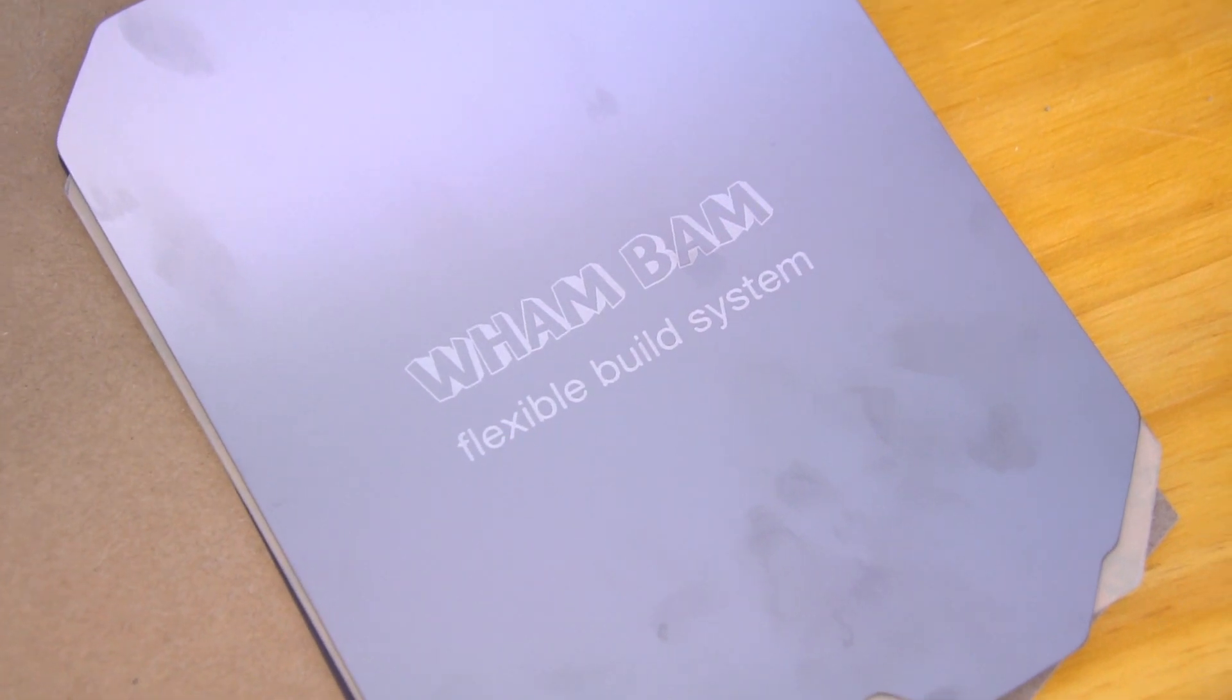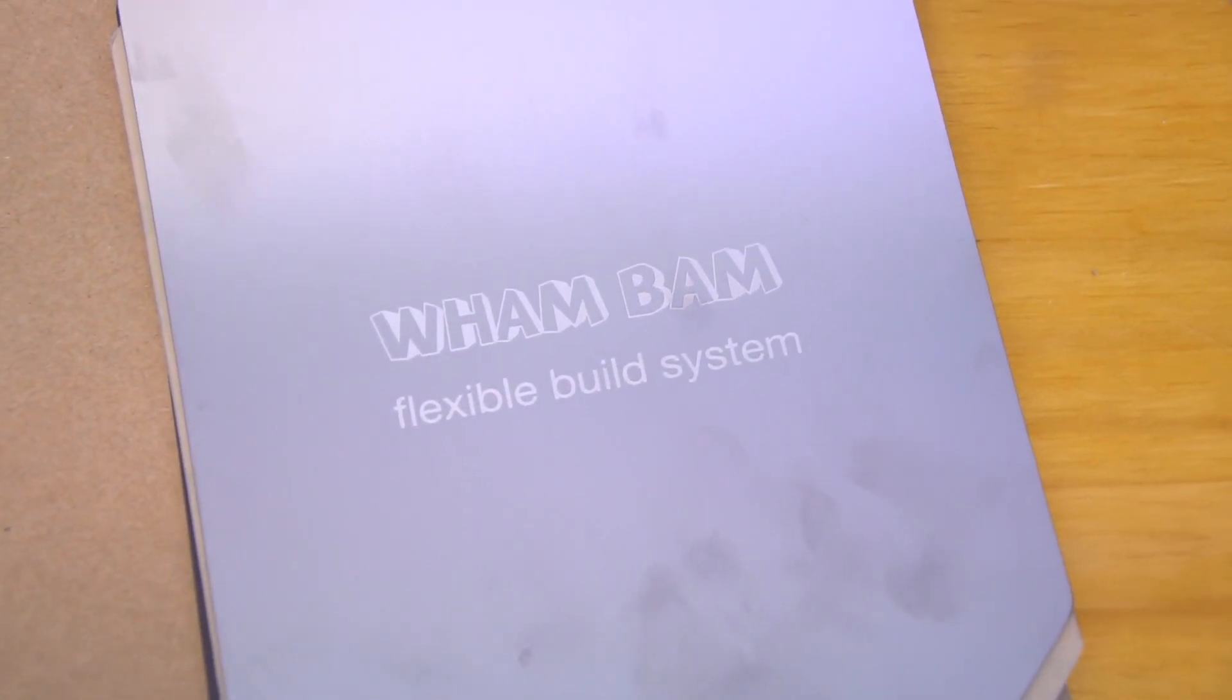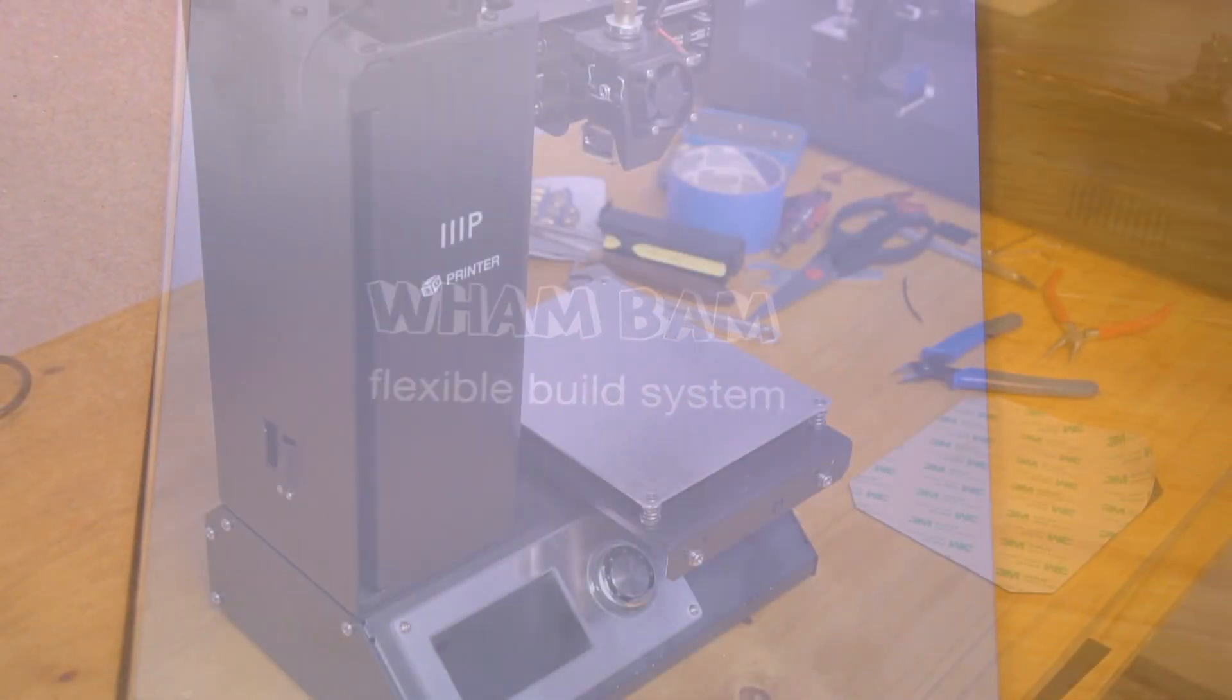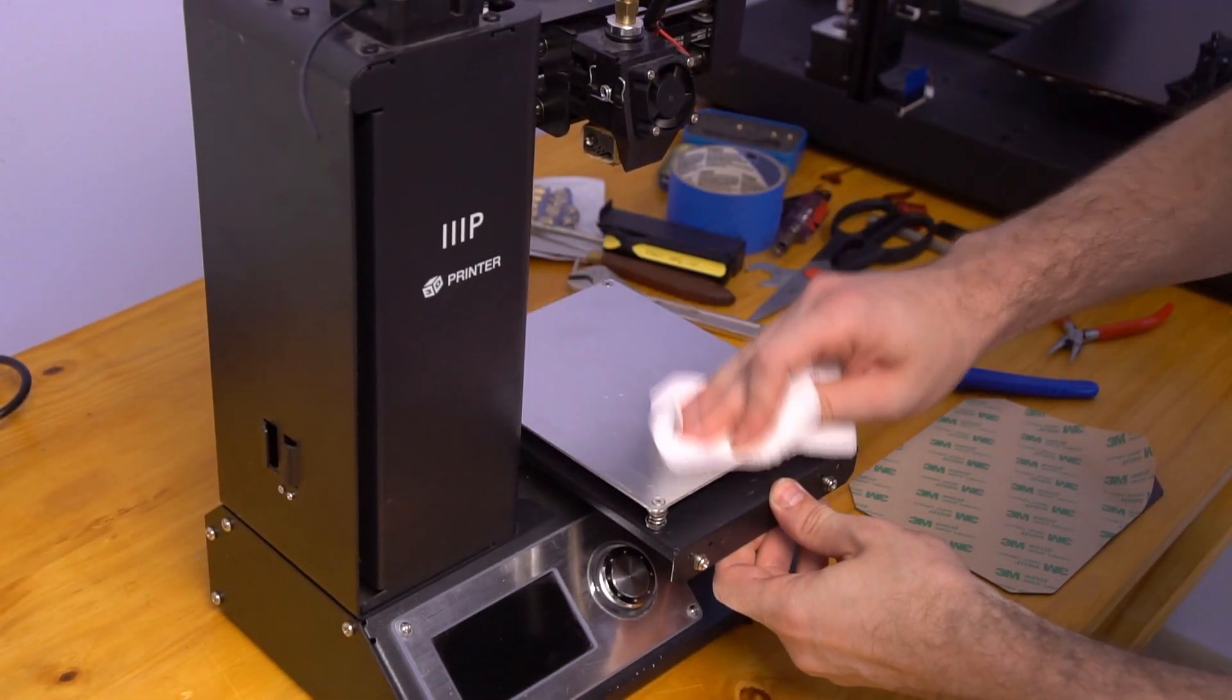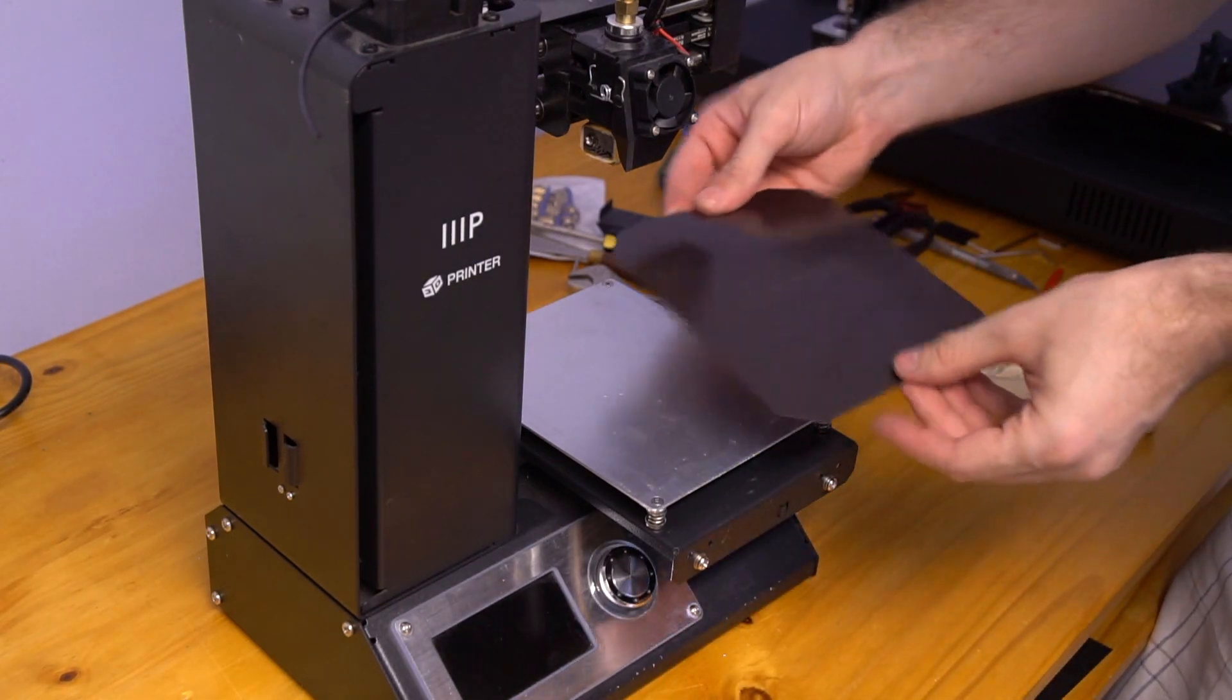Well, I'm upgrading to a magnetic build surface from Wham Bam. Since I do a lot of production with this machine, the ability to quickly remove parts will help me reduce my cycle times and allow me to make more parts faster.